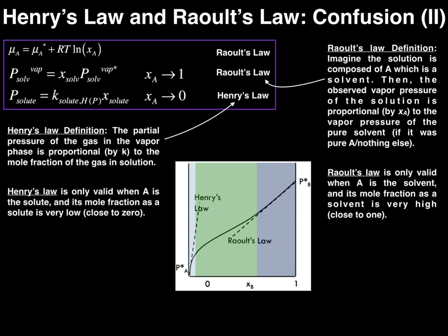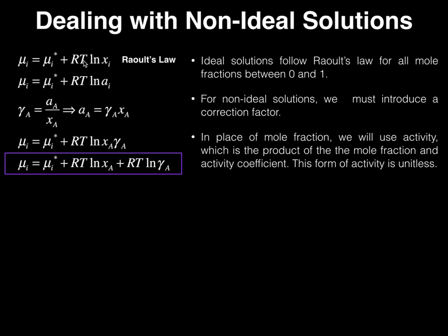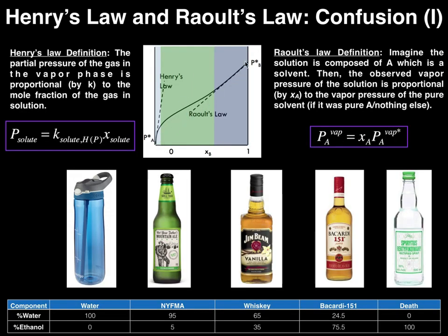Now here I have the equation of Raoult's Law in terms of A, and here I have it expressed in terms of I — I just means any species within the solution. Ideal solutions do follow Raoult's Law for all mole fractions between 0 and 1 — that's a definition of an ideal solution. However, when we don't have an ideal solution, when we have maybe an ideal dilute solution, which is what this graph is plotting on the solid line, we can't use Raoult's Law to figure out what's happening in this green region. We also can't use Henry's Law.